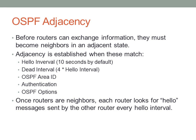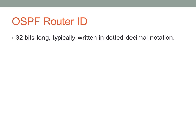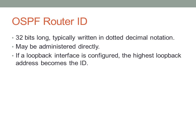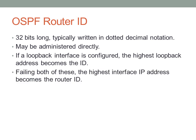Once the routers are neighbors, each router looks for hello messages sent by the other router every hello interval — so every 10 seconds, it's expecting a hello from the router across the way. The OSPF router ID is typically 32 bits long and written in dotted decimal notation, just like an IP address. It may be administered directly, configured via a loopback interface (the highest loopback IP becomes the router ID), or if neither criterion is met, it uses the highest configured interface IP address as the router ID.